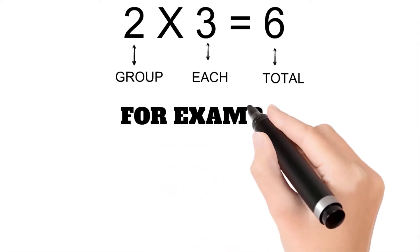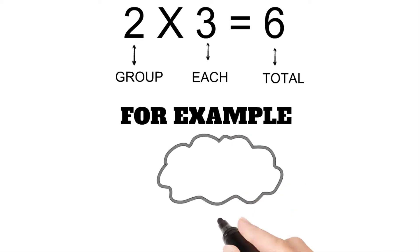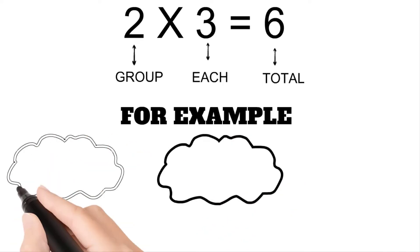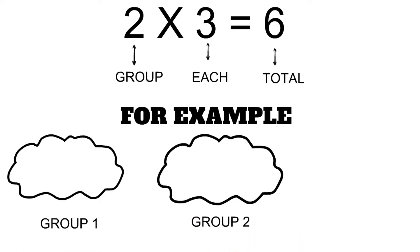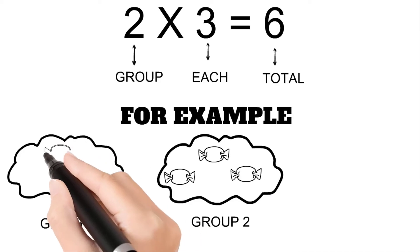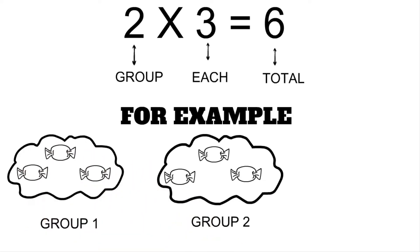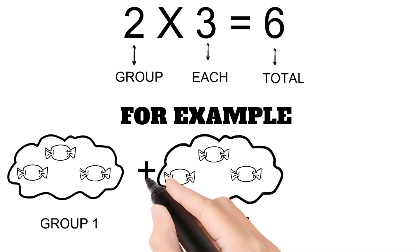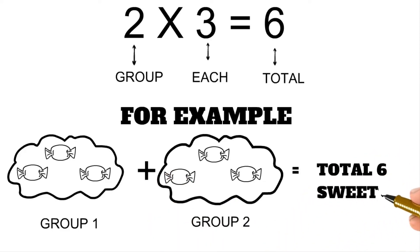For example, we have two groups — group one and group two. In each group, we have three sweets. When we add these two groups together, we will get a total of six sweets.